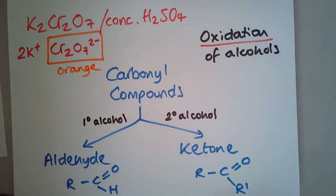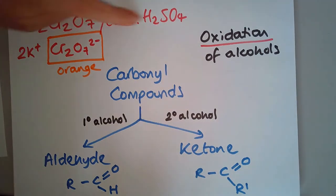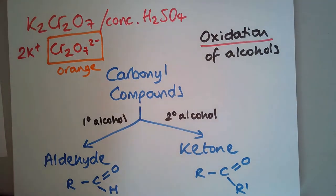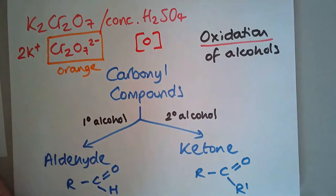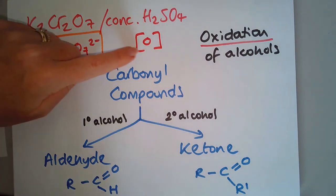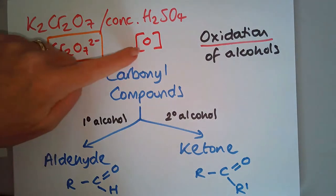To do the equations, to put all of this in an equation would be too much, so fortunately we've got an abbreviation that we can use. It's an oxygen in square brackets [O]. That's our oxidizing agent. This represents this.